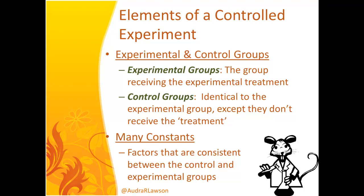In terms of the elements of a controlled experiment, the ideal experiment has two groups: the experimental group, which receives the treatment, and a control group, which is identical but doesn't receive the treatment — like the placebo in a medical test. You also want to ensure that factors are consistent between the control and experimental groups: similar gender composition, similar age, similar characteristics. The more similar your groups can be, the more effectively you control for factors that can influence people's attitudes and assumptions.